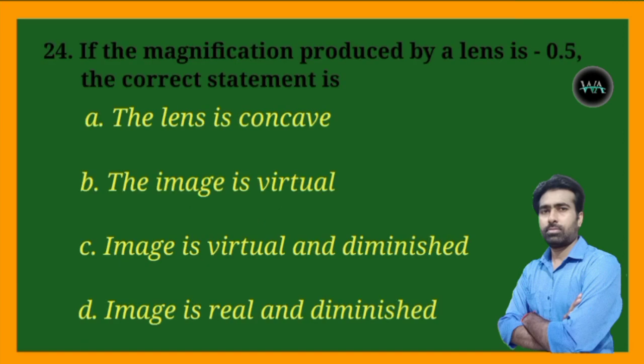Next question: if the magnification produced by a lens is minus 0.5, the correct statement is — the lens is concave, the image is virtual, the image is virtual and diminished, or the image is real and diminished?